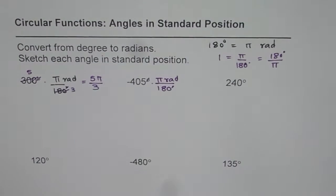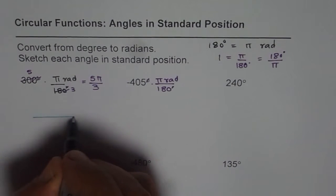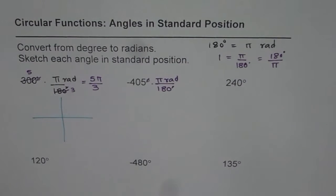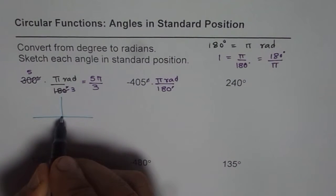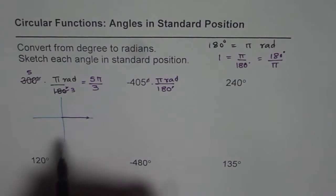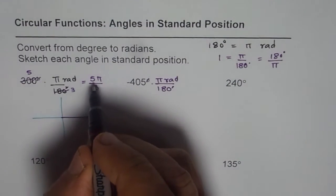So that is equivalent to 300 degrees in radians. Now let us see how to sketch this angle, 5 pi by 3. When we are sketching angle in standard position, where is the initial arm? Initial arm is always along positive x-axis. So that is your initial arm.